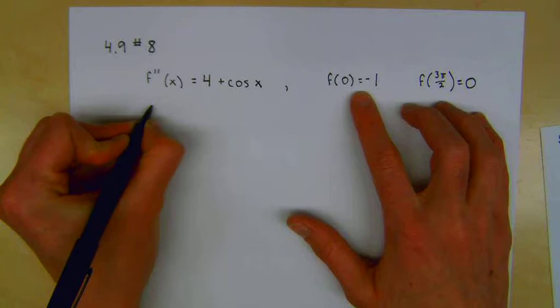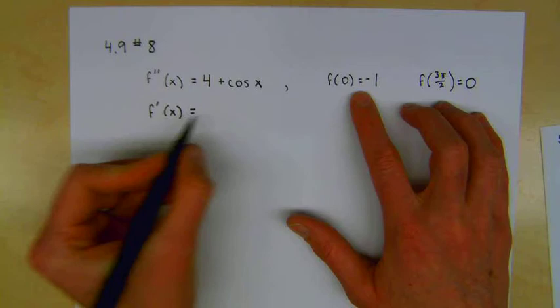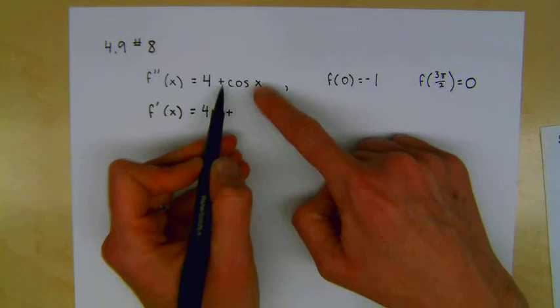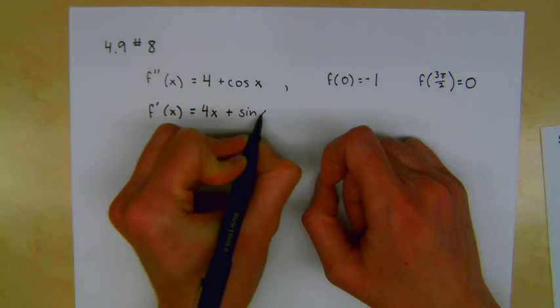So let's take one antiderivative. So my first antiderivative, 4 becomes 4x, and cosine of x becomes, I have to think, the derivative of cosine is negative sine, so I don't want negative sine. I want to go as an antiderivative, it becomes positive sine. Sine of x plus some constant.